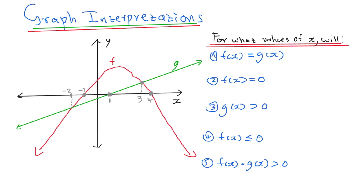So my answer will be x is equal to negative 2 — union is just a fancy way of saying 'or' — and x is equal to 3. And that's all they were looking for.